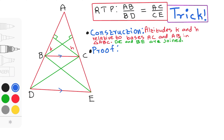We are back at getting the concept of this proof. I know I've done this before, back when I didn't have the resources for a proper video. So guys, let's look at this one. We are proving that AB over BD is equal to AC over CE.